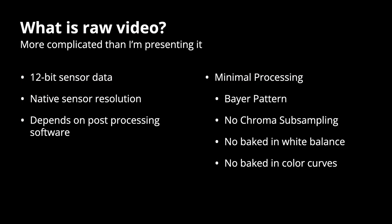So what is raw video on the R5? Put simply, it's 12-bit sensor data read out at the native resolution of the sensor with minimal processing done to it in camera. It's not quite zero processing, but very close. The image is not debayered, which means it has to be processed in your post-processing software — your NLE or other post tools — to have a usable image. No chroma subsampling or color space adjustments are done, and white balance adjustments are saved as metadata rather than baked into the pixel values.